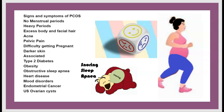Symptoms and signs of PCOS include: no menstrual period or heavy periods, excess body weight and facial hair, acne, pelvic pain, difficulty getting pregnant, and darker skin. It is often associated with type 2 diabetes, obesity, and obstructive sleep apnea.